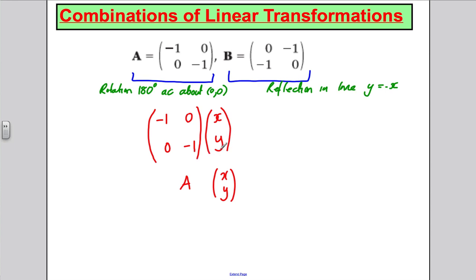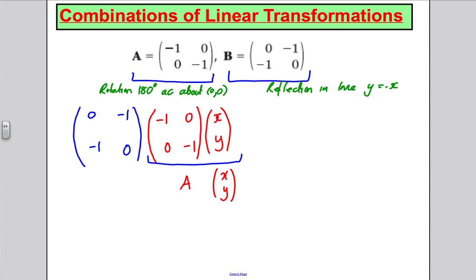Having done that, whatever I get out the end, I then want to reflect those answers in the line y = −x. So I could then multiply that result by the matrix (0, −1; −1, 0). That would perform the rotation of 180 degrees anticlockwise first, and then a reflection in the line y = −x. So I would apply B to it afterwards.